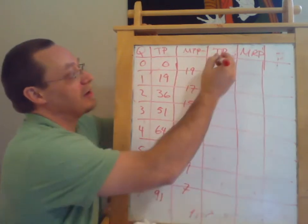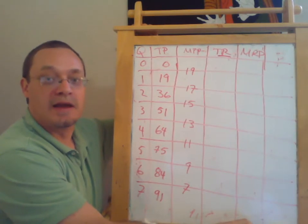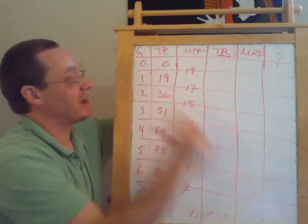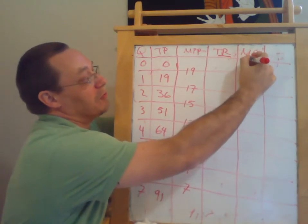And I'm going to think about the total level of revenue, total revenue at different numbers of workers that I've employed. And I'm going to think about what we call the marginal revenue product.